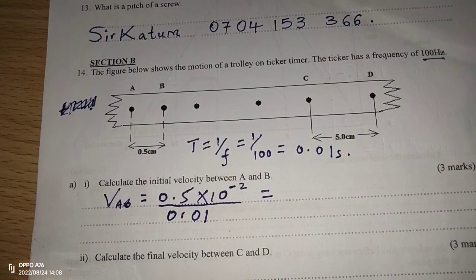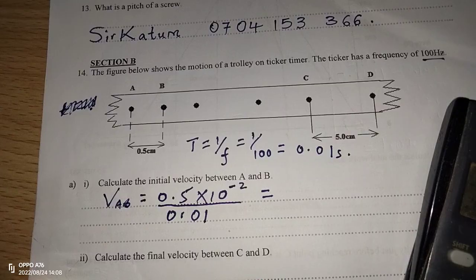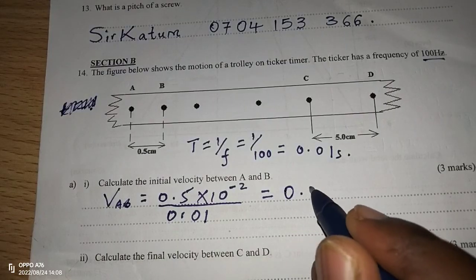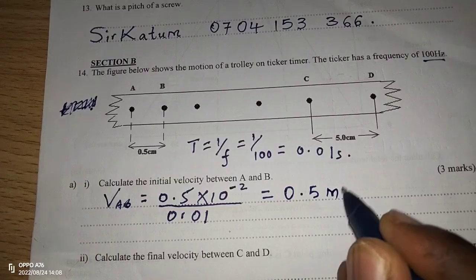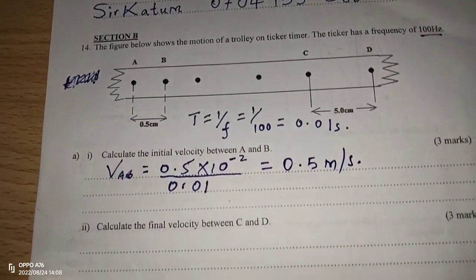Therefore, the velocity we'll be getting here now will be in meters per second. So, 0.5 divided by 0.01. This is going to be 0.5 meters per second. So, this is the velocity between A and B.